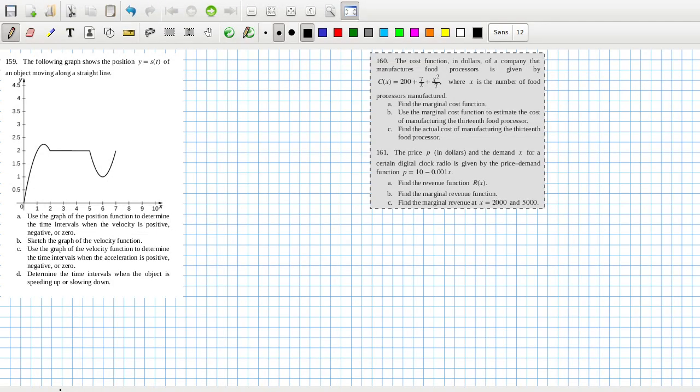Okay let's get started here. Use the graph of the position function to determine - I think it should say t, because the t is here. Use the graph of the position function to determine the time interval when the velocity is positive.